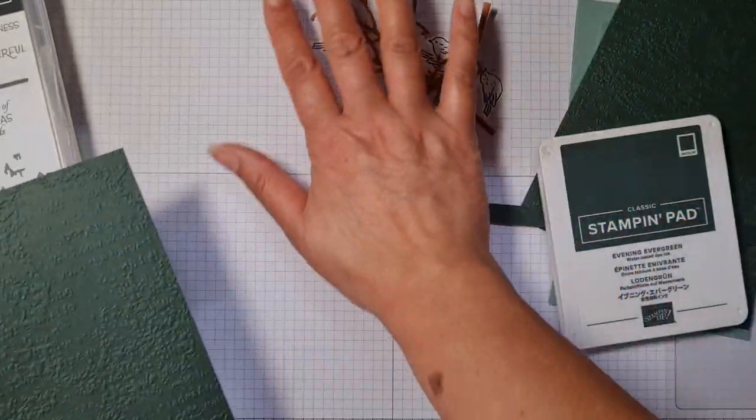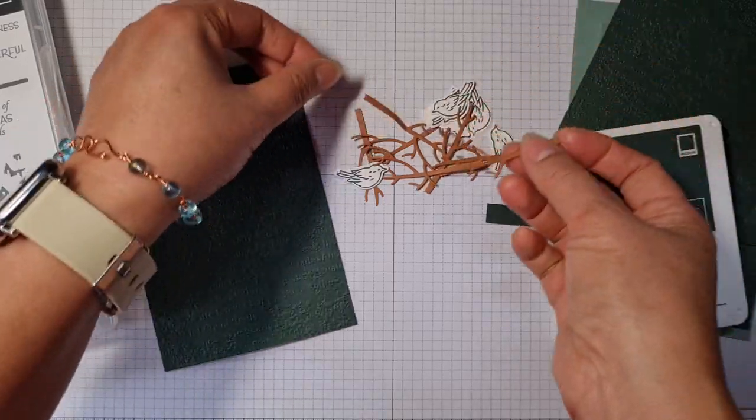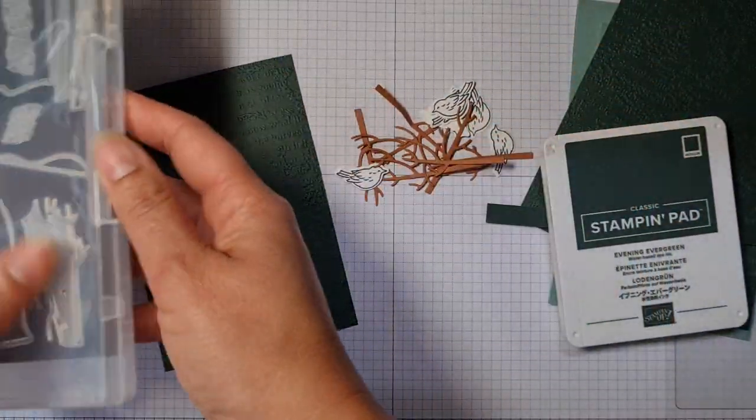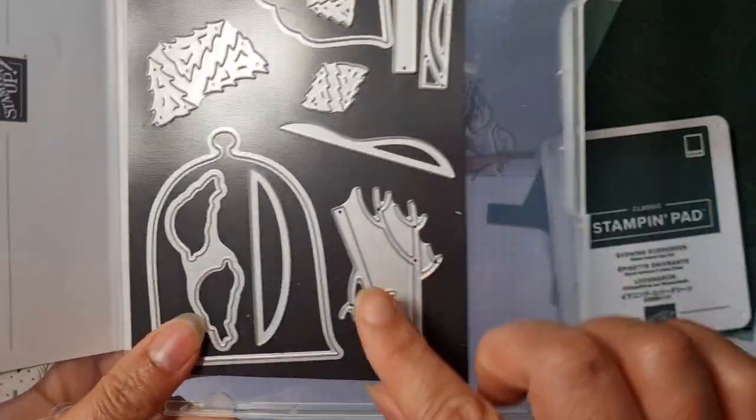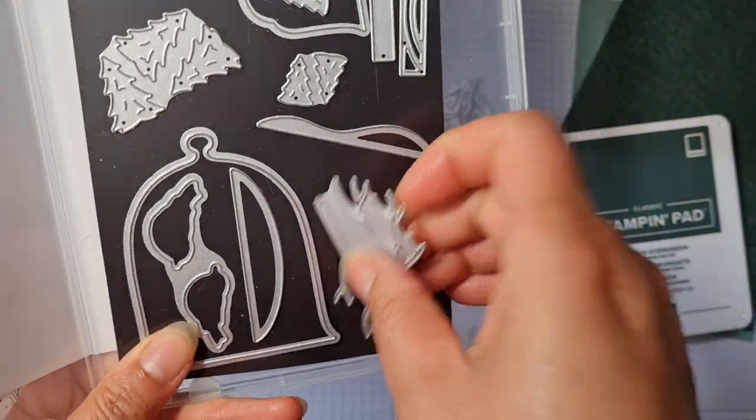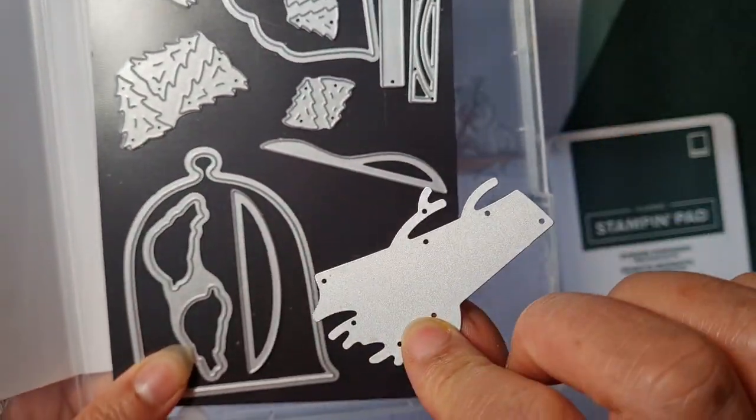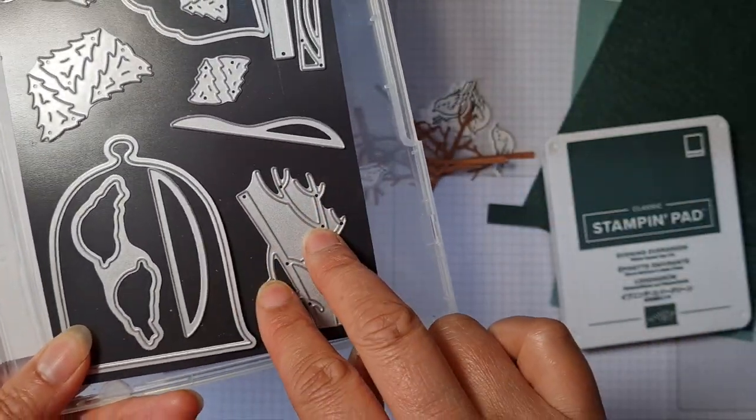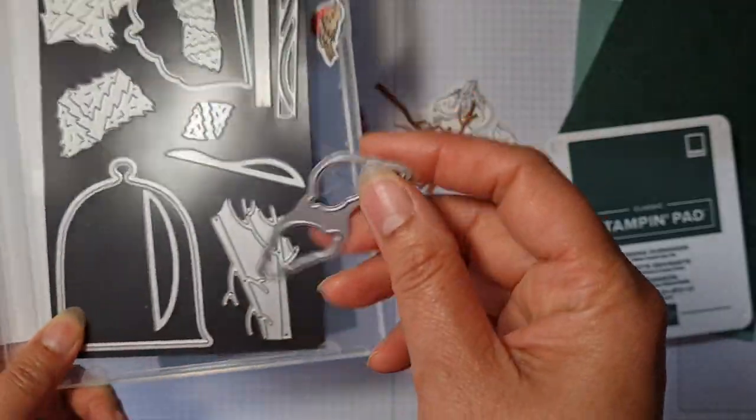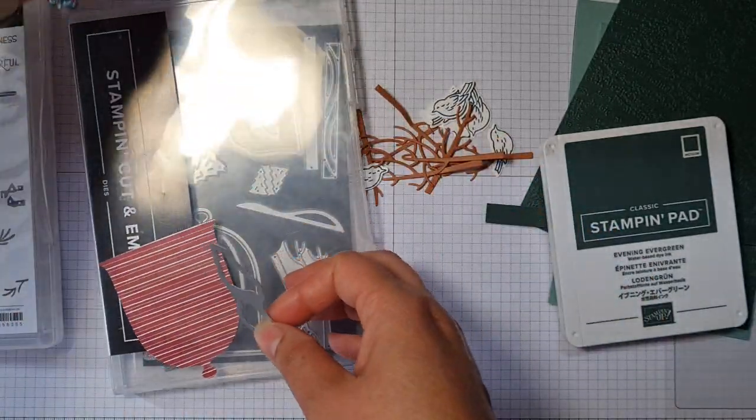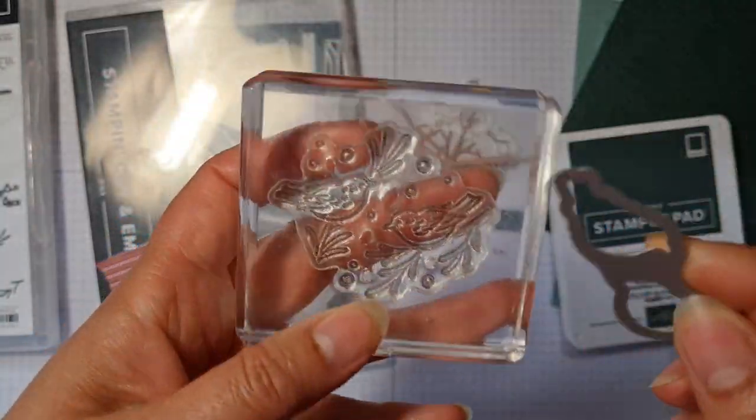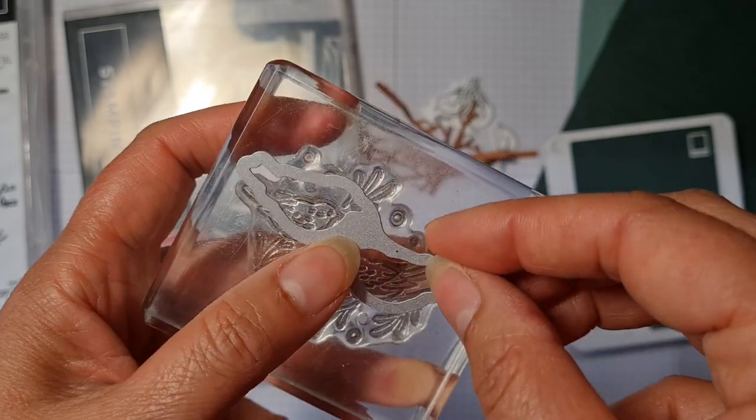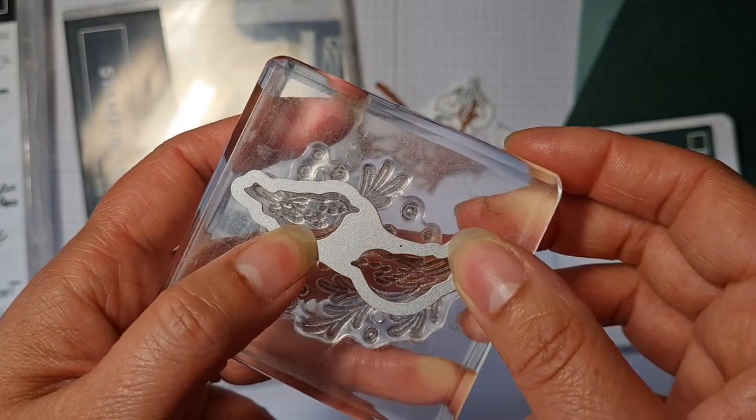So I pre-cut some branches. They come in the die set and they're very helpfully actually together on one metal piece so that you can cut a few out at a time, two at a time there. Then the bird's dies very helpfully sit on top of the two little birds that are on this stamp set here. So they match up beautifully.